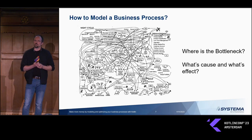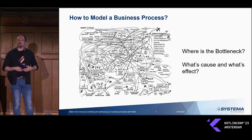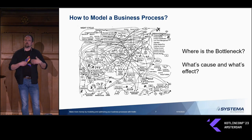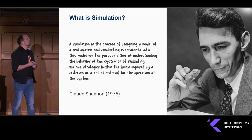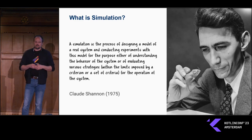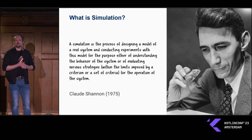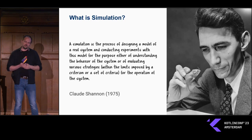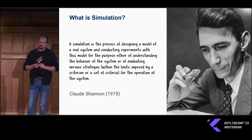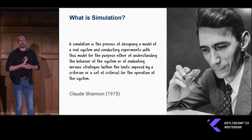We can try to model our business process — a popular approach is to just draw it, put it on a piece of paper to truly understand how a business works. But this often ends up as a complex mesh and doesn't answer the key questions: what is the bottleneck in my business? What would I need to do to produce more, serve more customers, deliver more goods? And what's often unclear is cause and effect in complex organizations. I'd like to quote Shannon here: simulation is a process of designing a model of a real system and conducting experiments with it for the purpose of understanding the behavior of the system or evaluating various strategies for its operation.